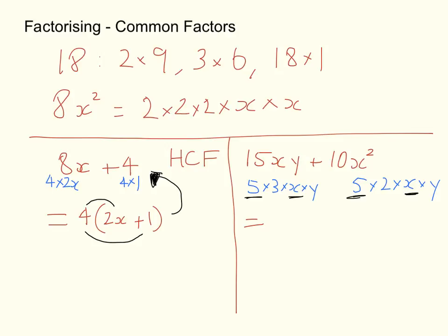Now they don't share the 3 and the y or the 2 and the second x there they don't share. But what we can do then is say okay, we write our common factors outside the brackets.